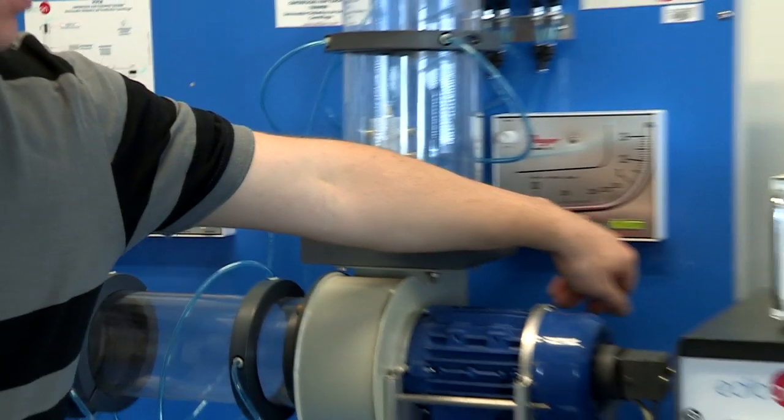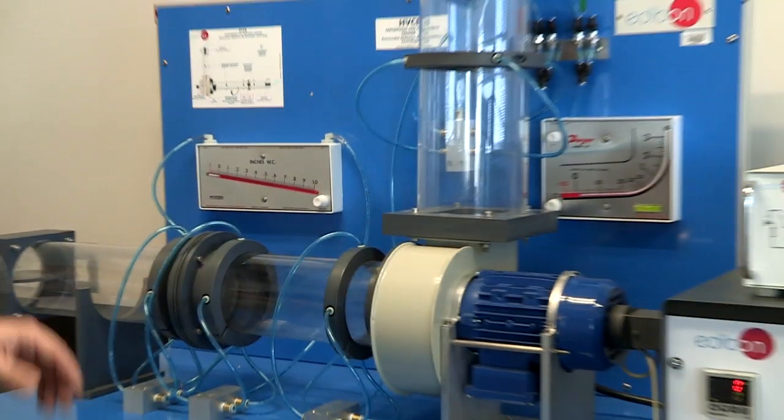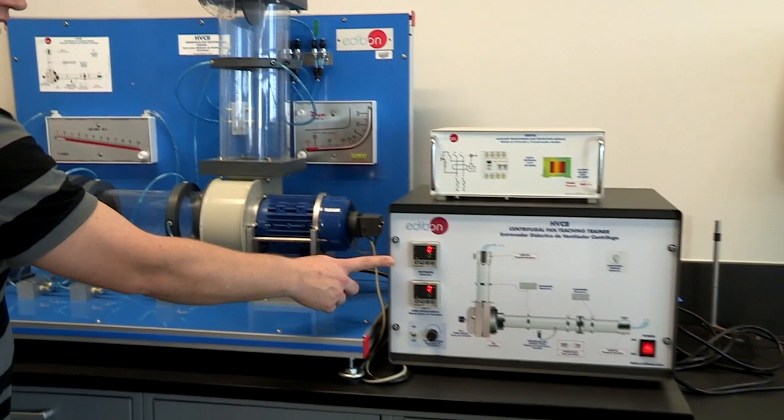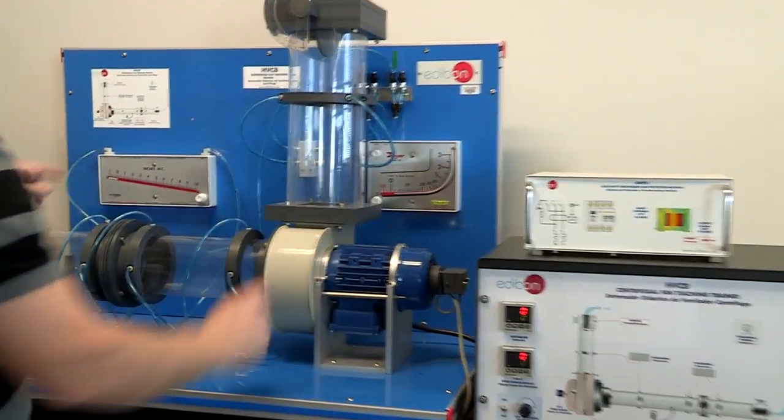And right here, this is the outlet. So you're going to want to make sure that you know where all four of these are because you're going to have to get your watts, fan speed, outlet and inlet water columns so that you can write them all on your table.